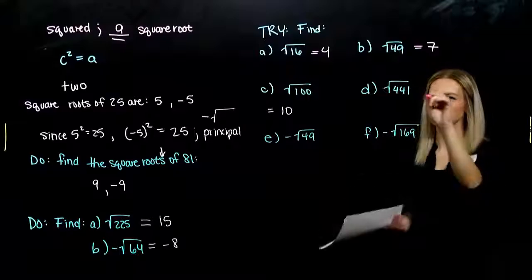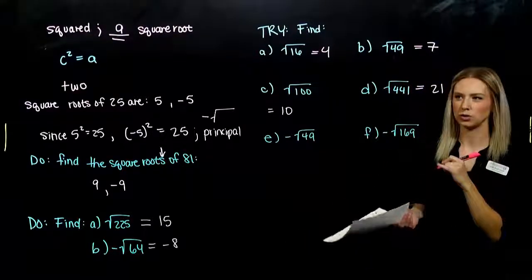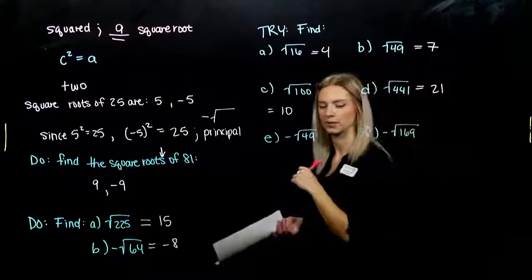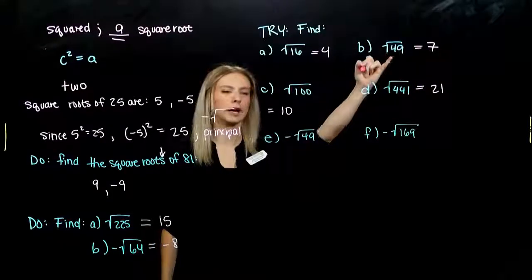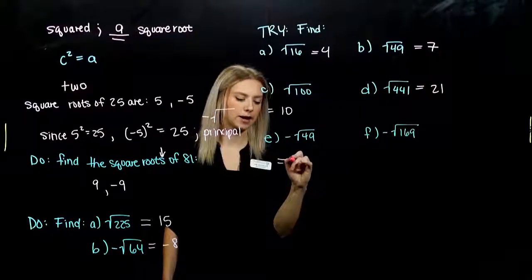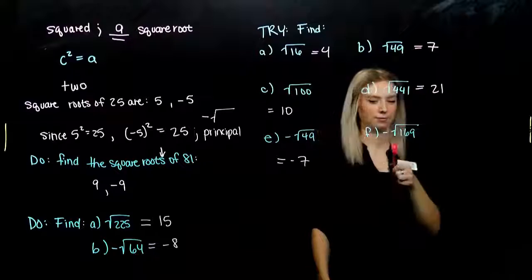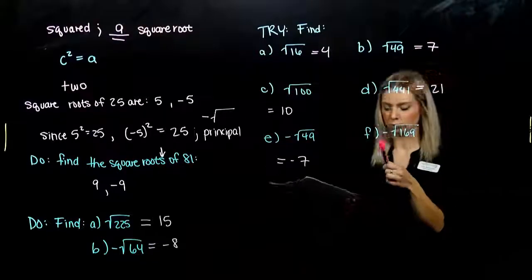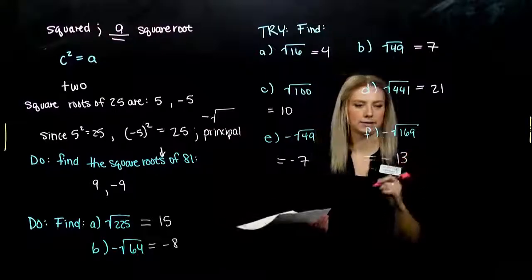For part D, we're asking for the positive. 21 times 21 gets us to 441. And for part E, we're asking for the negative root of 49. So, in this case, we have negative 7. And F, again, the negative root of 169 is negative 13.